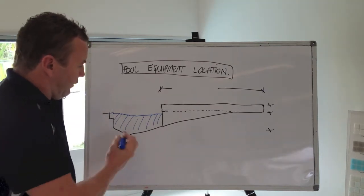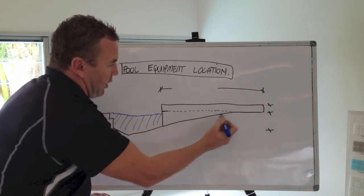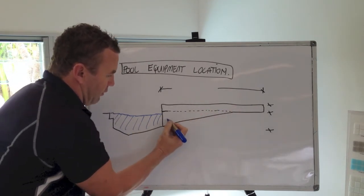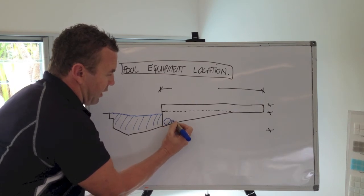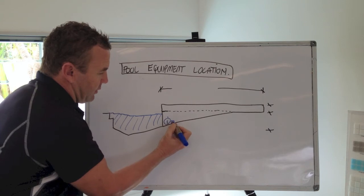So roughly this is our pool. Plant equipment can be located anywhere within this area. So for argument's sake, it can be located at the bottom of the pool - that's our filter, that's our pump.